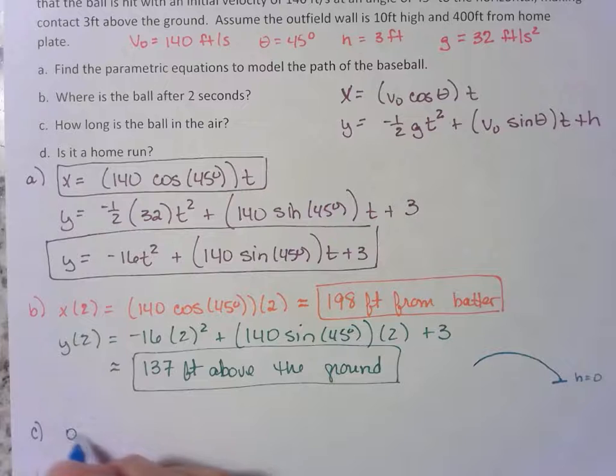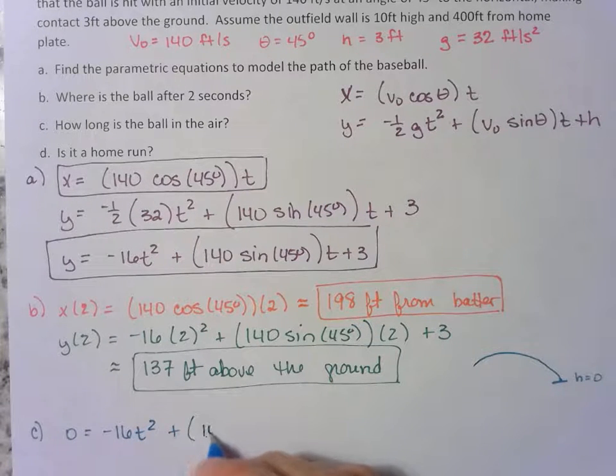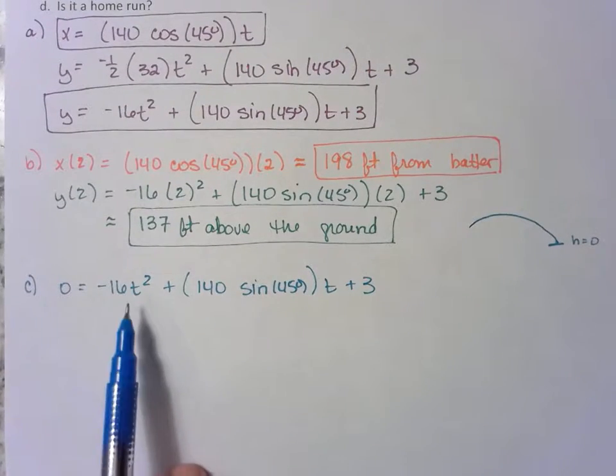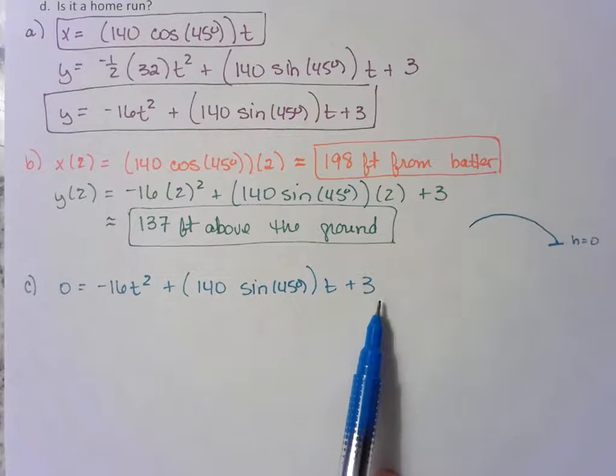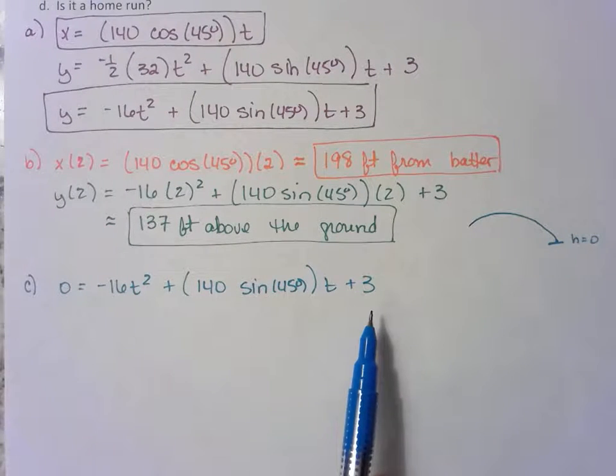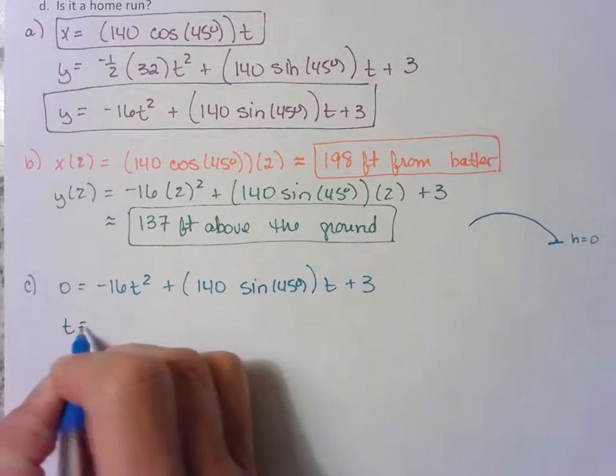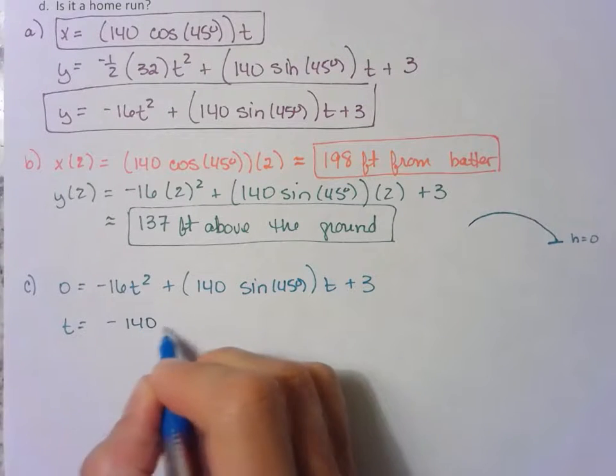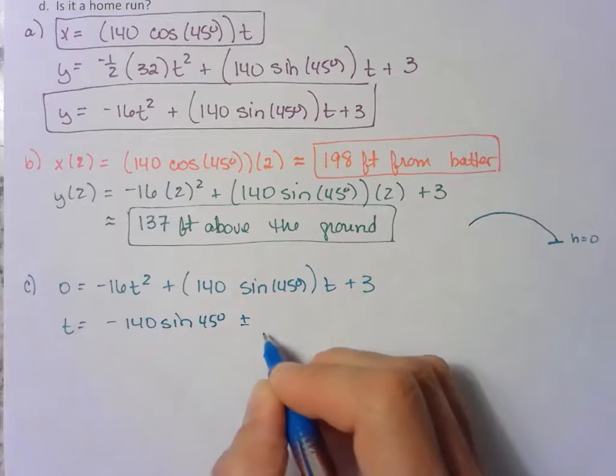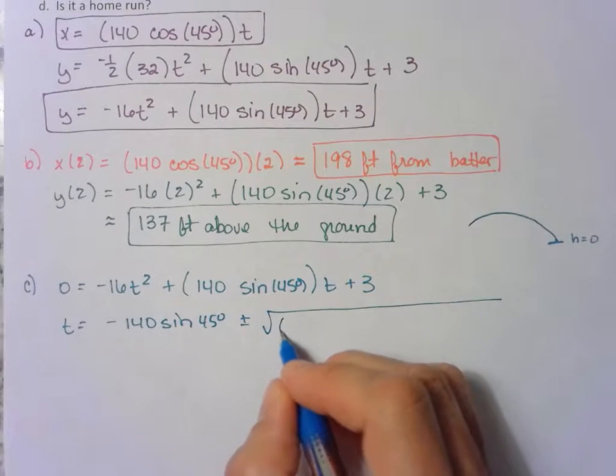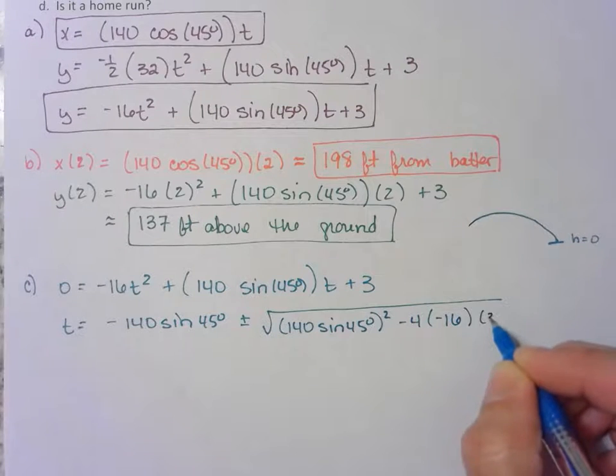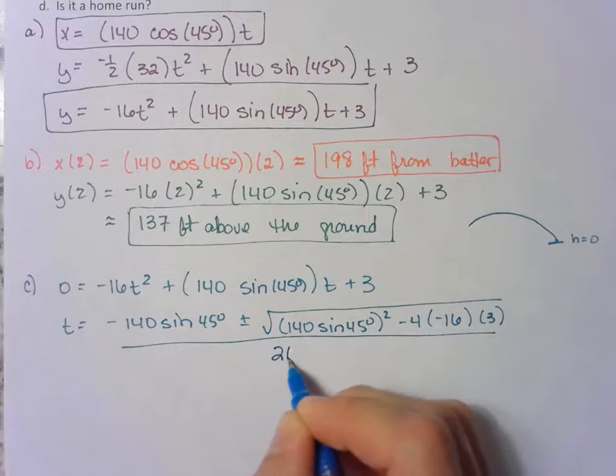Now this equation looks kind of daunting, but if you'll notice, it's a quadratic. This is squared. This is a singular variable, and this doesn't have a variable. So this makes a quadratic equation, which means we can use the quadratic formula. So t is equal to negative b. All of this is b. So we have negative b plus or minus the square root of b squared minus 4ac all over 2a.